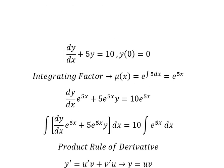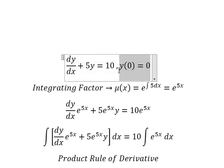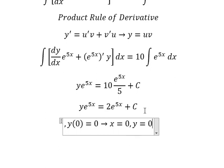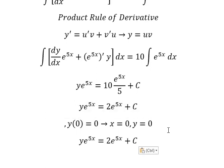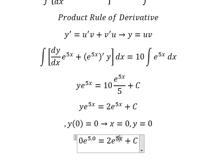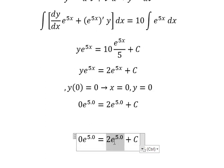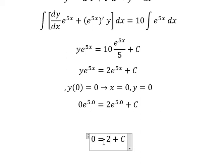Now we have the initial conditions: when x equals 0, y equals 0. So we substitute 0 in here and here. We divide both sides by e to the power of 5 and simplify. This one gives number 1, so we have only number 2. This one gives 0. So we move number 2 to the left, and we get c equals negative 2.